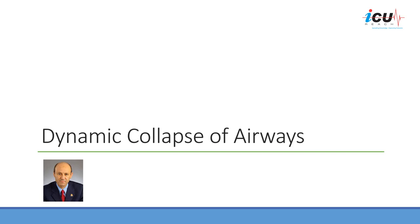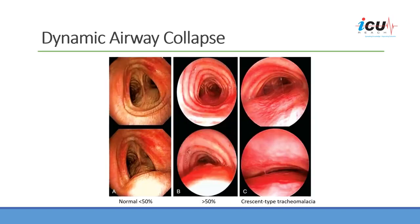We will explain the dynamic collapse of the airways and how it is manifested on the ventilator scalars and loops. Normally, there is a dynamic airway collapse characterized by bulging of the posterior membrane inside the airway lumen. The cartilages are intact and airway narrowing during expiration is usually less than 50%.